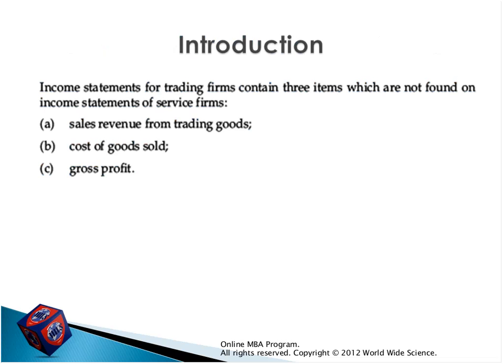The income statement for trading companies contains three items not found in service companies: sales revenue from trading goods, cost of goods sold, and gross profit. These are the three items that come under the income statement of a trading company. Service companies — like consulting companies providing services such as accounting — don't include these items.